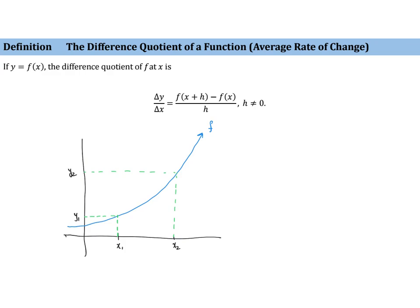So what is the rate of change between these two points? Let us call the first point just x, and then its corresponding y value will be f of x. Now, some distance away from x — we'll call that distance h — is another x value. So x increased by a value of h is going to be x plus h. If that's the input, the output of our function is going to be f of x plus h.